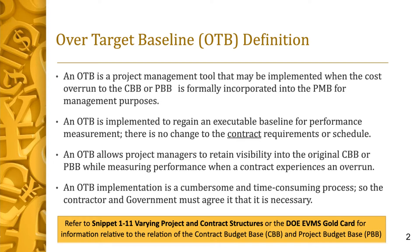At a minimum, reporting of ACWP must continue. Please refer to Snippet 111, Varying Project and Contract Structures, or the DOE EVMS Gold Card, for information relative to the relation of the Contract Budget Base (CBB) and Project Budget Base (PBB).